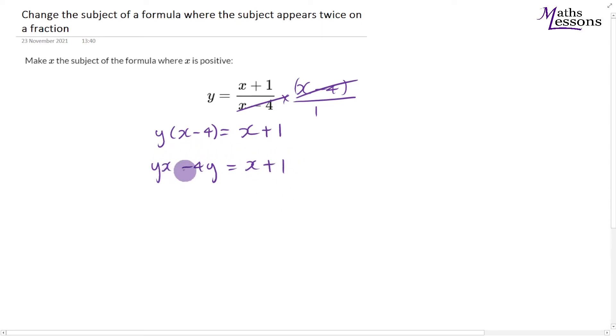Now we need to get all the x's on this side. So I'm going to take away this x from this side and also add the 4y. Remember, I'm taking x off this side and adding 4y to this.